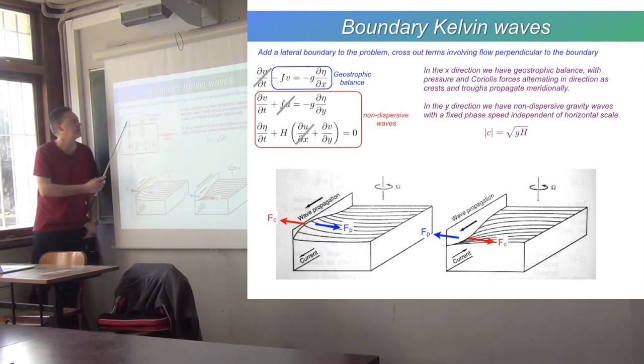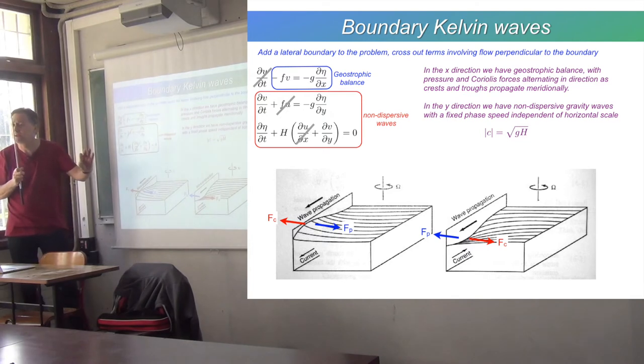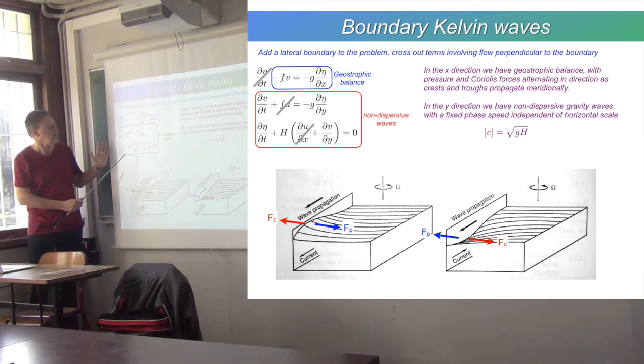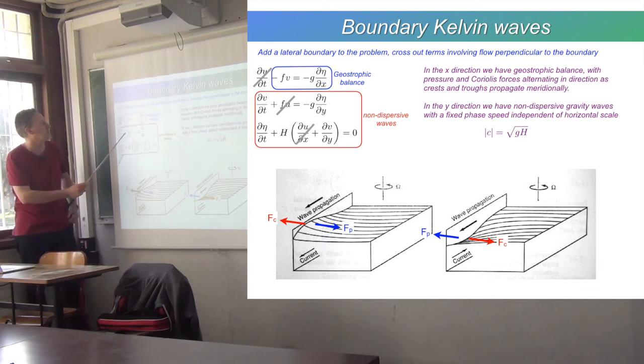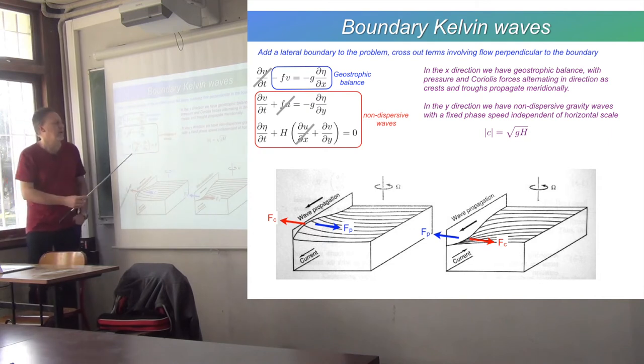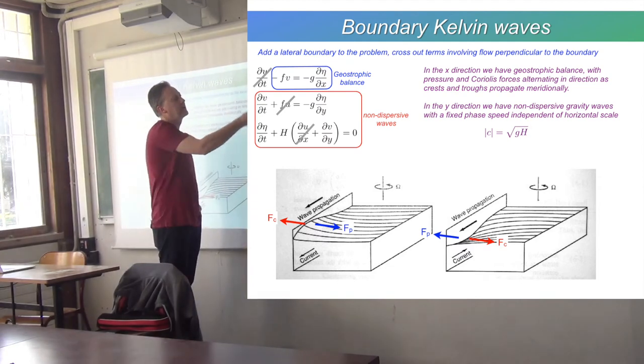So in one direction it's balanced geostrophically, but in the other direction we have something which is out of balance, so it will oscillate and gives us a wave solution. We have dv/dt = -g dη/dy, and then we have this continuity equation.